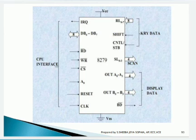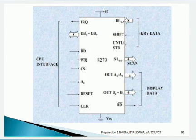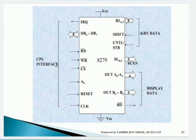Here is the detailed pin diagram explanation of the 8279. The pins correspond to three sections: CPU interface section, keyboard/display section, and scan section. Let us see all these sections in detail now.